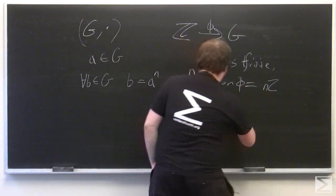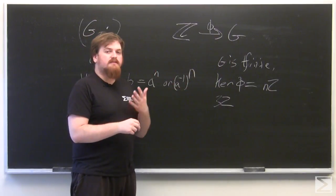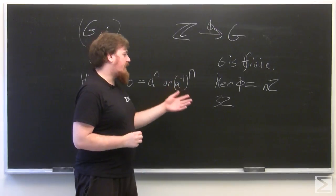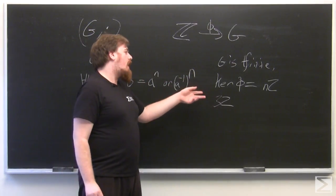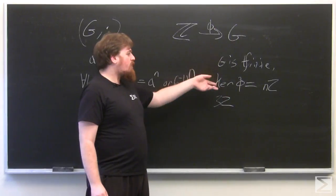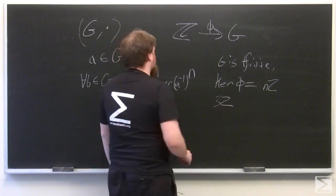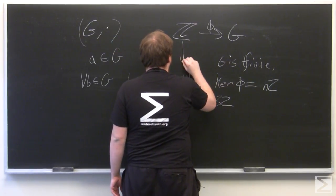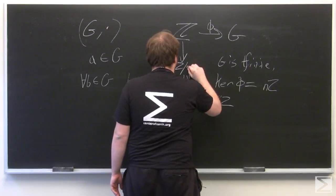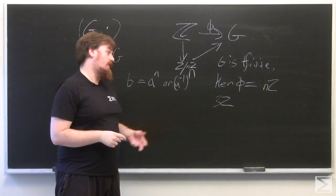And thus, every cyclic group is going to look like the quotient of Z by some nZ. From the first isomorphism theorem, we have this, like this diagram that we saw in the previous video.